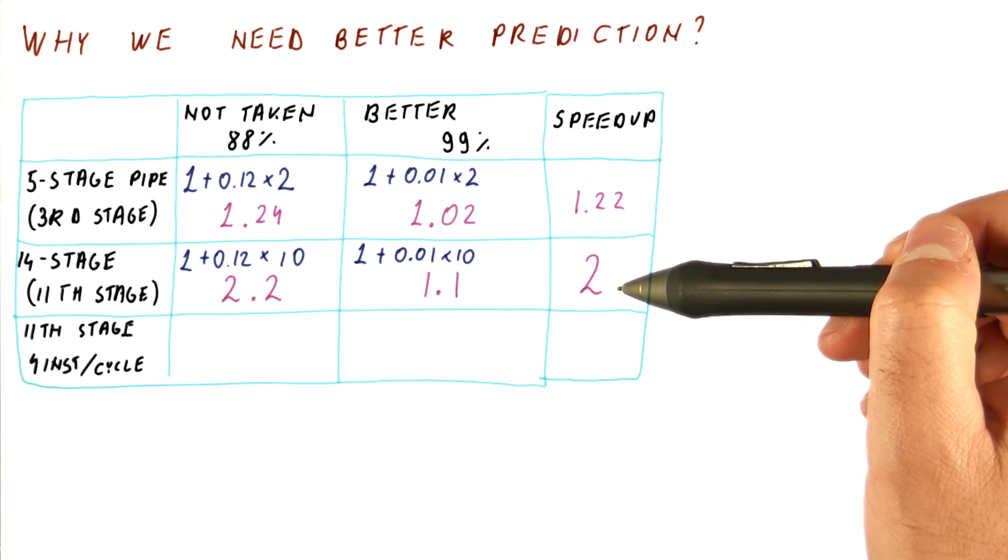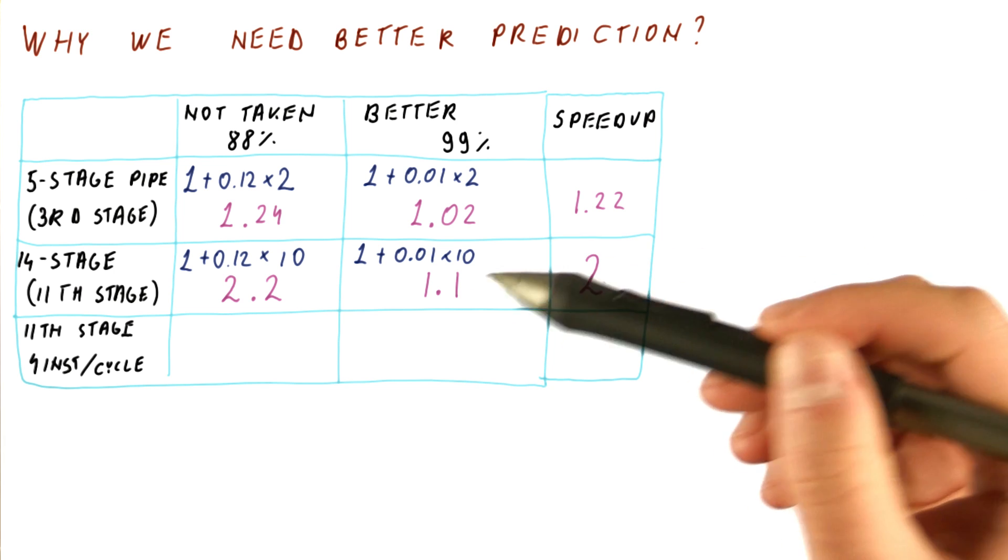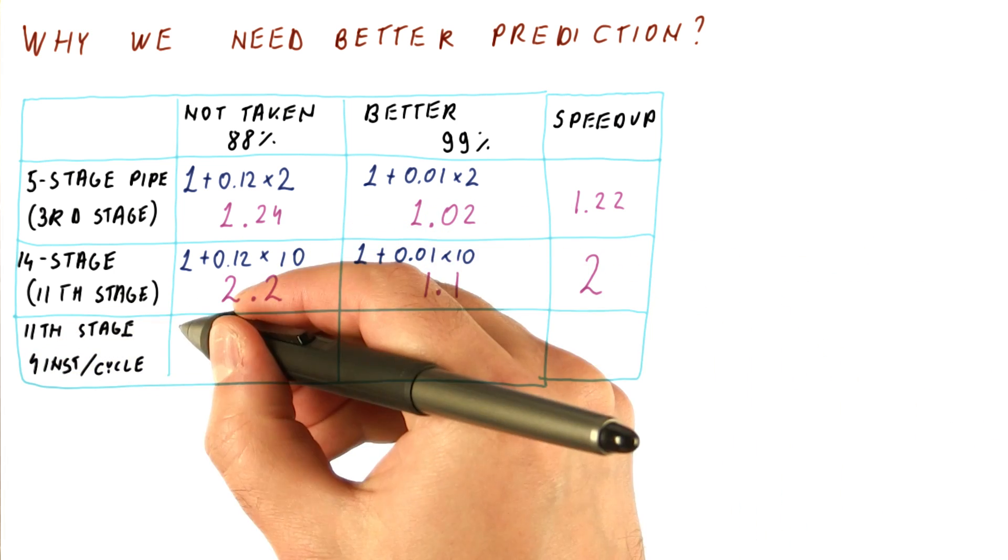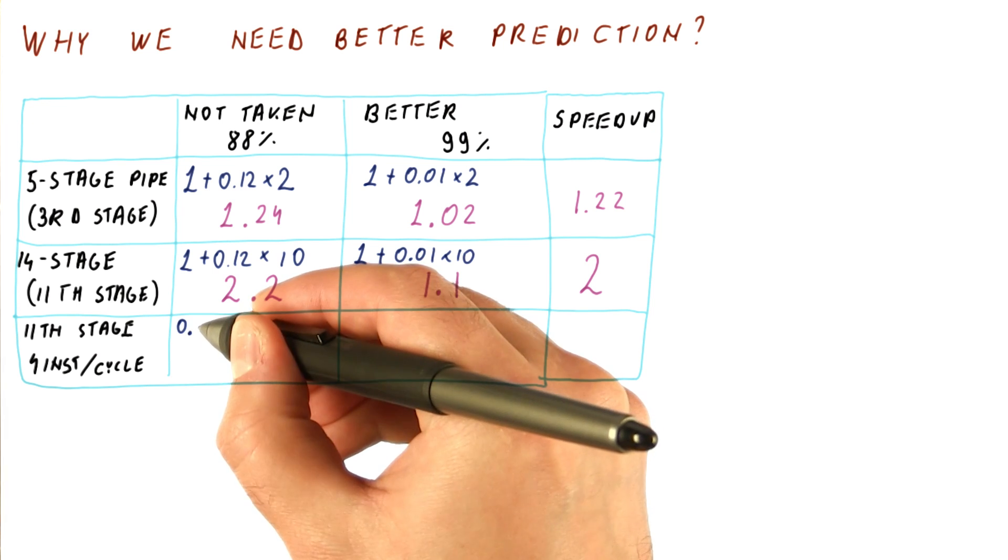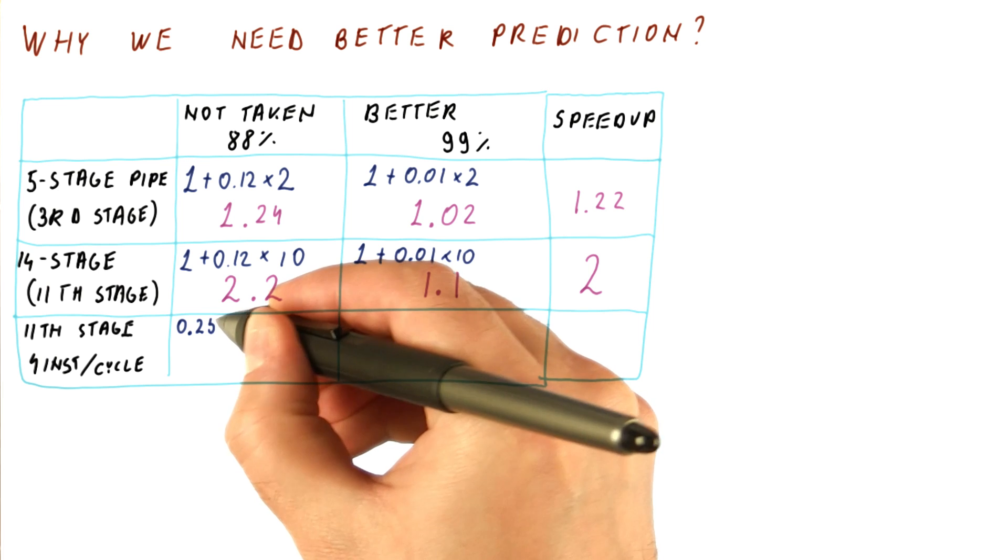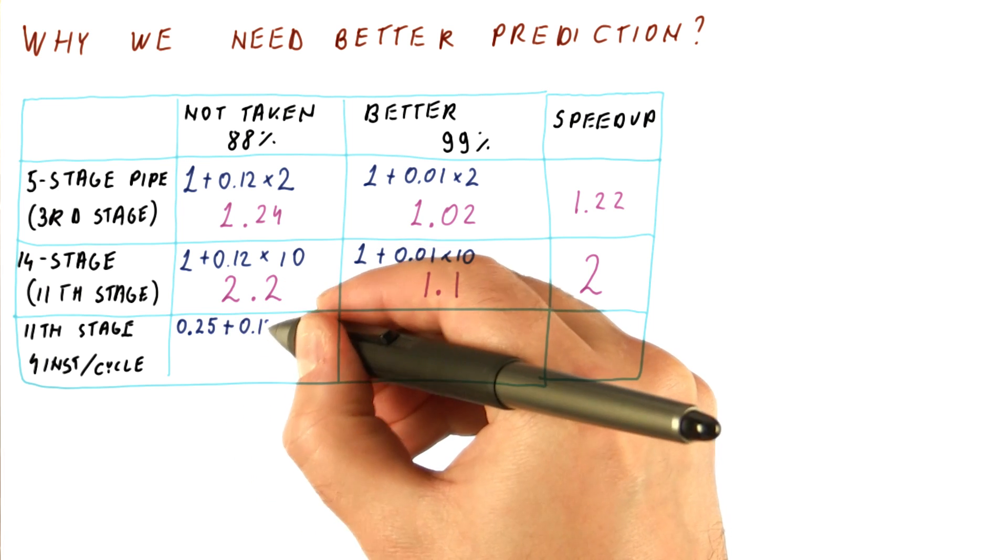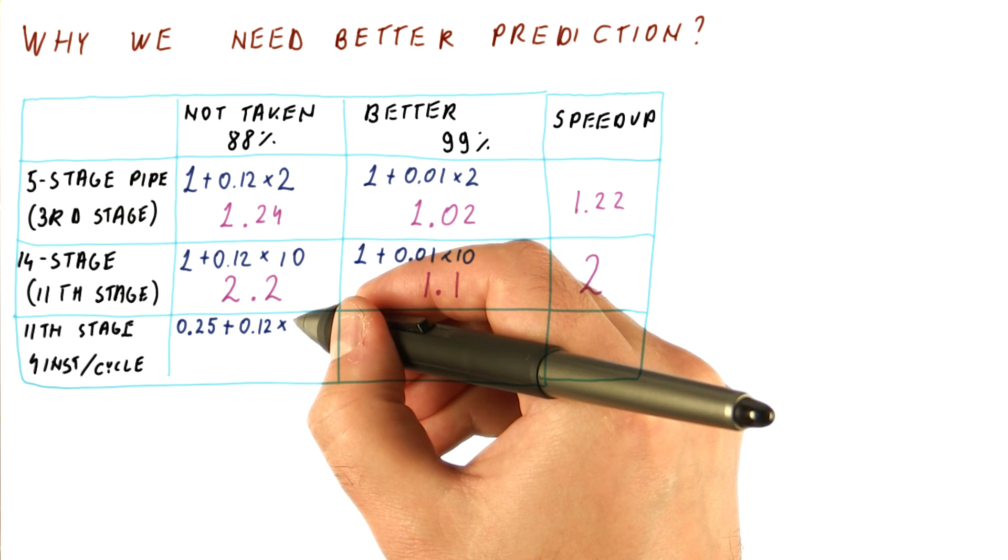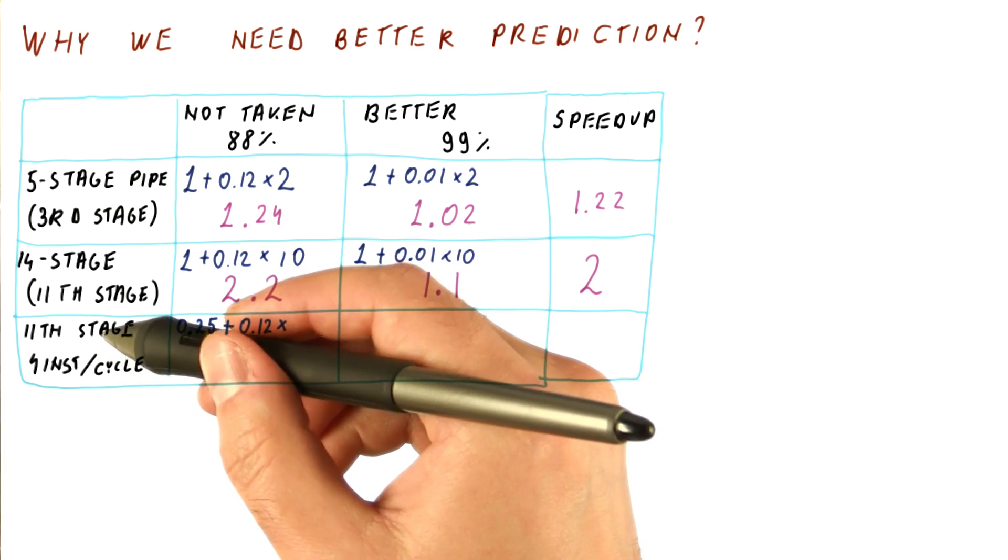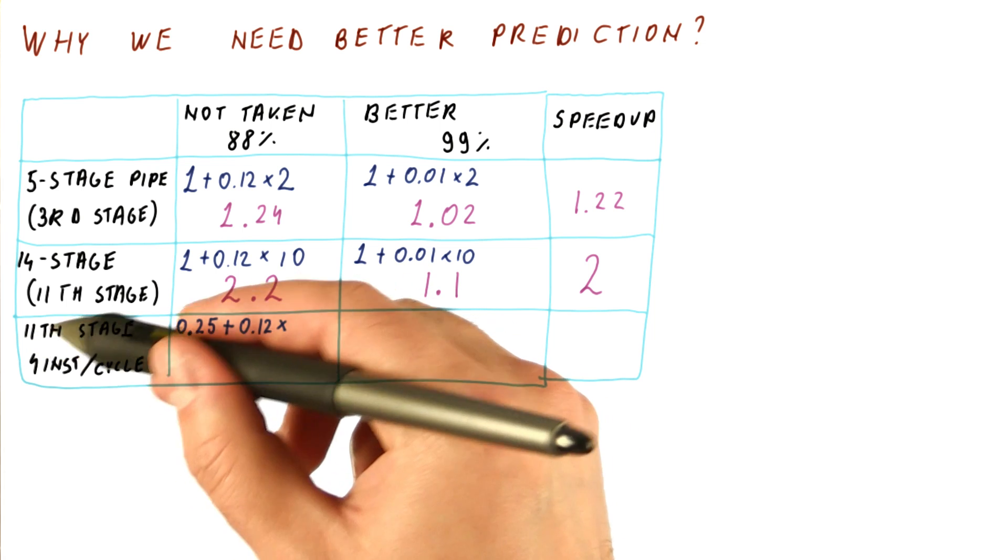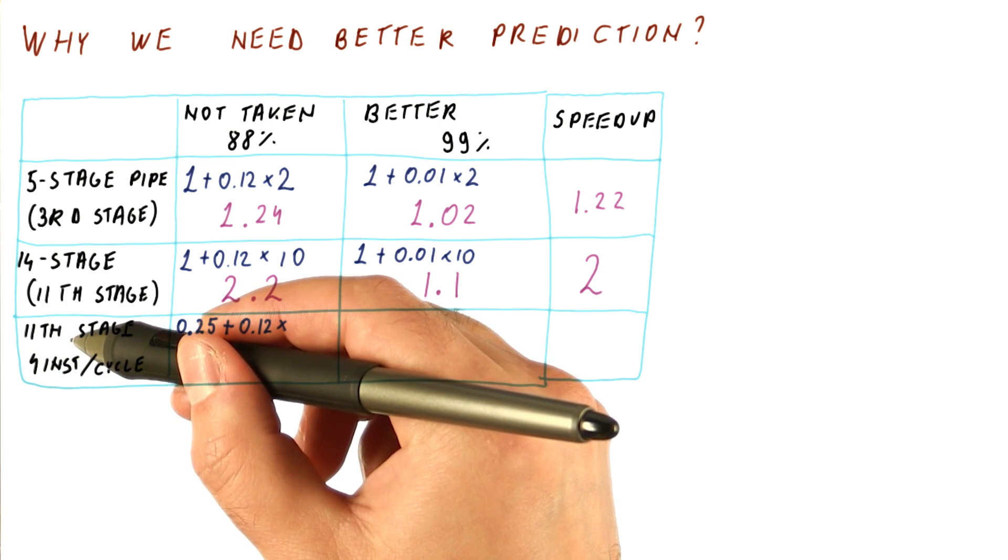But what happens when we also do multiple instructions per cycle? So this processor can do 4 instructions in a cycle. So the ideal cycles per instruction is one quarter of a cycle. We add to that how often we have mispredictions times how many cycles do we waste for a misprediction. We still detect mispredictions in the 11th stage, so everything done in the 10 cycles after the branch was fetched is wasted.